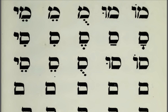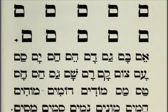And here we have a row of final Mems with no vowels. I suspect we have a printer's error here. Let's pretend that we have an Aleph in front of this Mem with a vowel. So: Am, Em, Im, Om, Um. And again: Am, Em, Im, Om, Um.